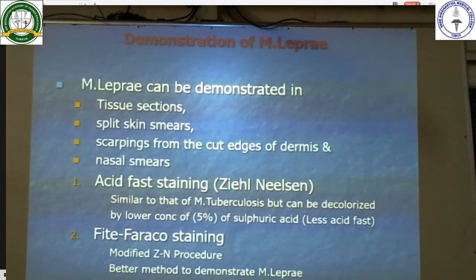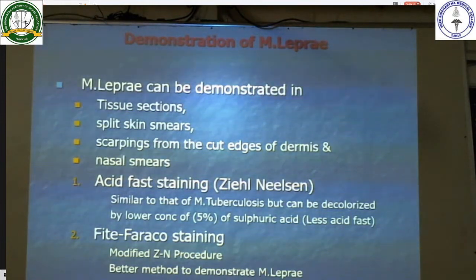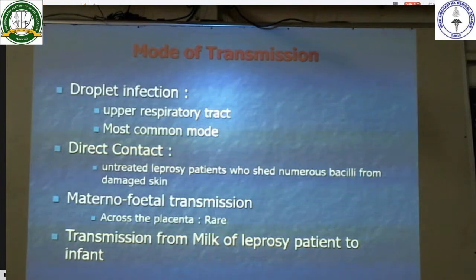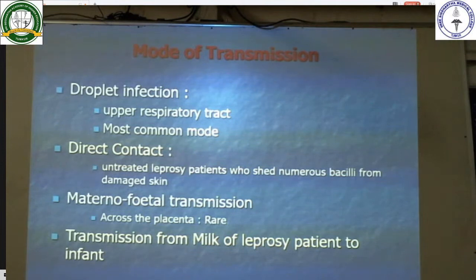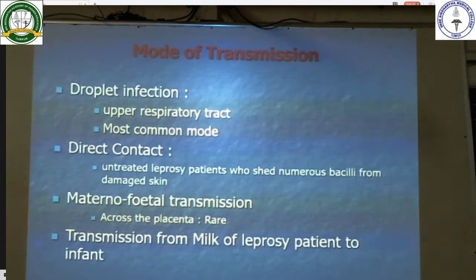Another method of staining is Wade-Fite staining, which is a modified ZN staining procedure and a better method to demonstrate Mycobacterium leprae. Another stain that can be used is Gomori methenamine silver. Mode of transmission of Mycobacterium leprae is by droplet infection from upper respiratory tract — the most common route — or also by direct contact. Untreated leprosy patients can shed numerous bacilli from their damaged skin. Maternal-fetal transmission is very rare but can occur via the placenta; transmission through milk of a leprosy patient to the infant can also occur.